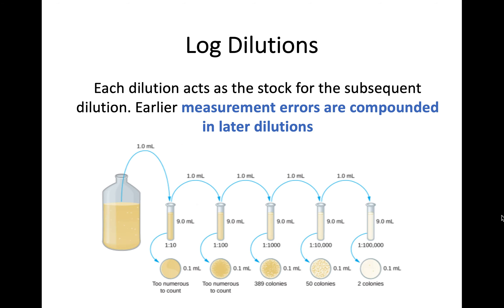However, in log dilutions it's slightly different. Because we are diluting proportionately, each dilution you create will then act as the stock for each subsequent dilution. So if you make a measurement error in one dilution, that dilution is now the stock for the ones that follow. Because that dilution is incorrect, the error is going to be compounded in all of your subsequent dilutions. That's why you need to be so careful with log dilutions — that's a potential error with your measurements.